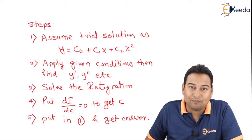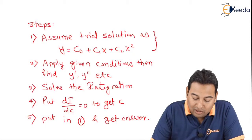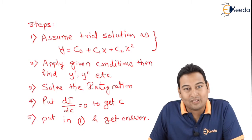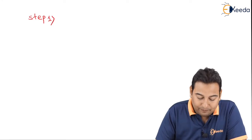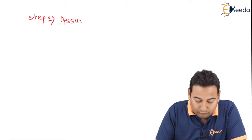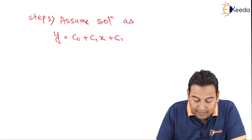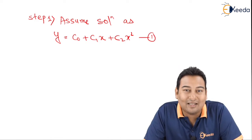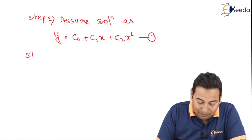We need to remember the five steps. The first step is to assume the solution as y = c0 + c1x + c2x². This is the required solution. There are three unknowns: c0, c1, and c2, that we need to find.